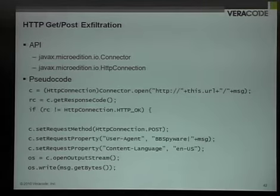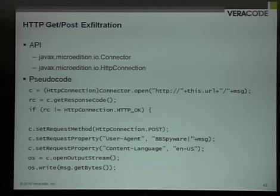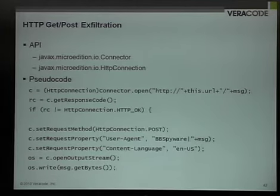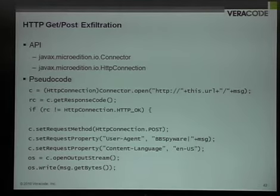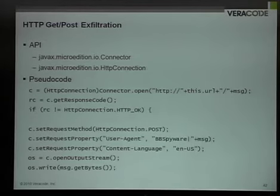We also have HTTP GET and POST — this is a second example of an exfiltrator built into the code. The GET model uses the connector method that we saw before, using a string of http://URL/message. The URL itself is configurable so we can pass data to a domain that we own, then append the message as a slash message at the end of that GET request, and all we have to do is look at the logs, capture the data, parse it out, and drop it back into whatever we want. The POST method is similar — in this example I'm actually setting the data to be the user agent as a secondary example. Down at the bottom you see where I'm jamming the message bytes into the output stream and sending it out via HTTP POST data. So conceptually similar but slightly different programmatically.